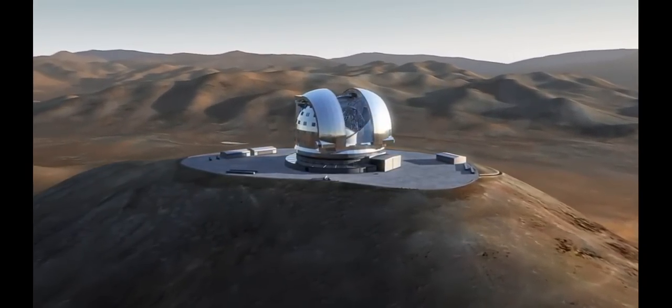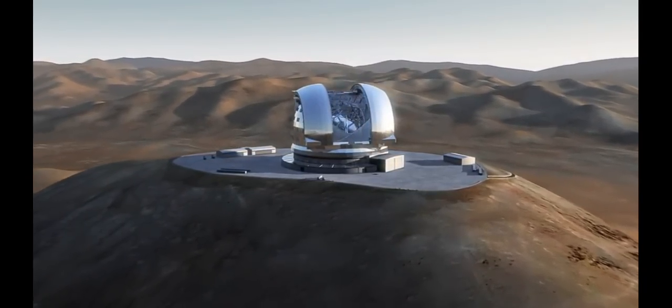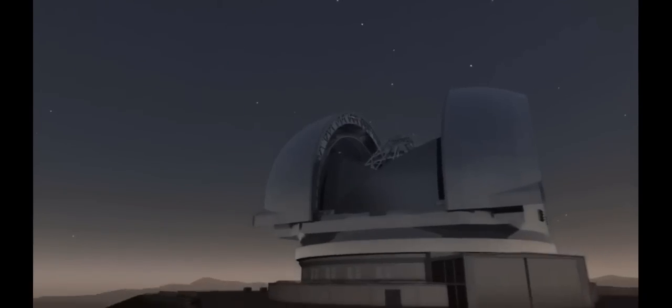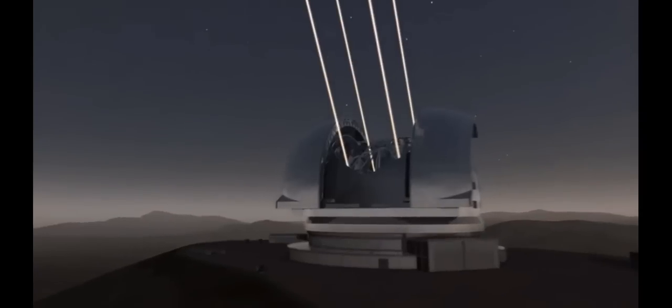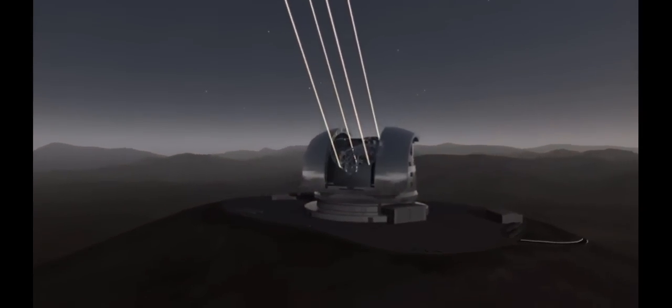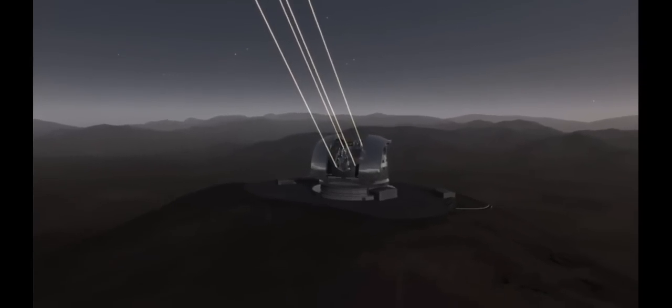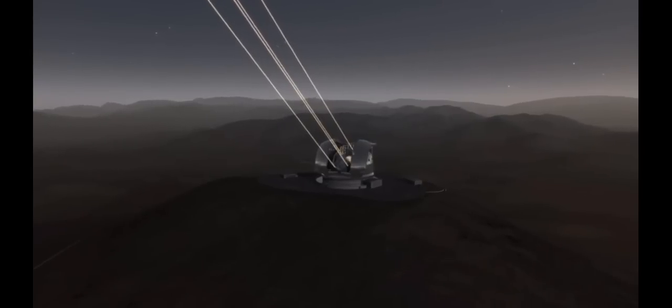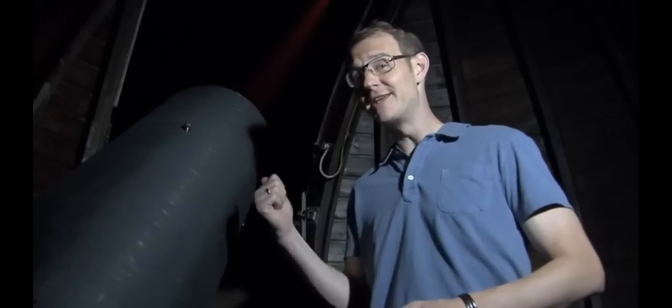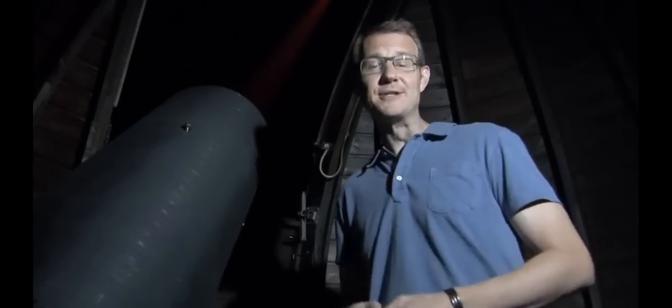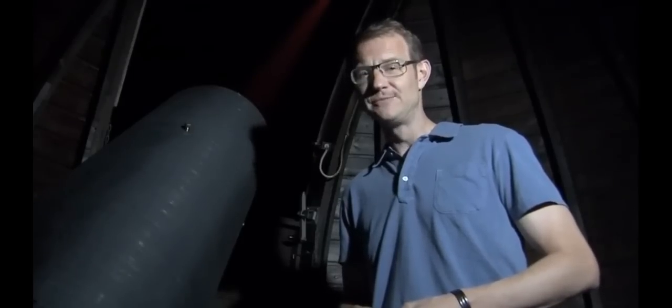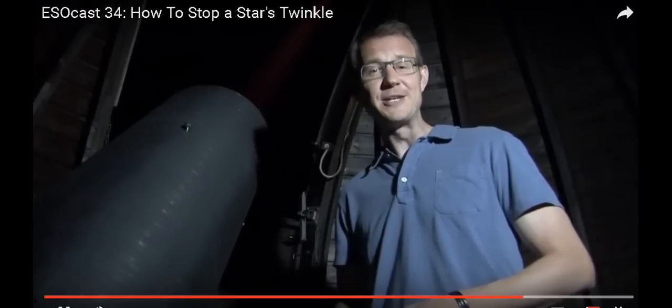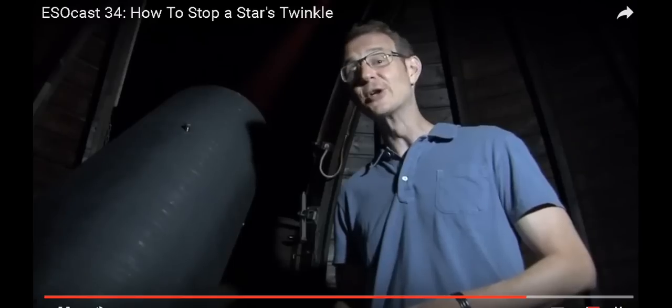Laser guide stars like this will be crucial for the forthcoming European Extremely Large Telescope which will use adaptive optics routinely. The telescope will be many times the size of today's biggest telescopes, which should mean much sharper image quality. But this great image quality will depend on how well the adaptive optics and the laser guide stars work. Pioneering new technologies like these will make a big difference to the world's most advanced observatories of the future, especially the EELT. This is Dr. J signing off for the ESO cast, join me again next time for another cosmic adventure.